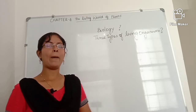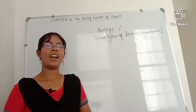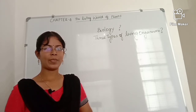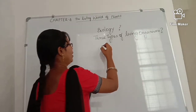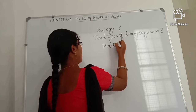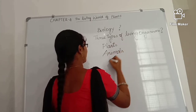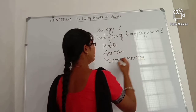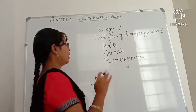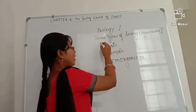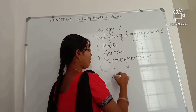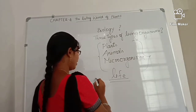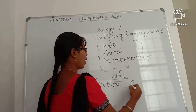What do you mean by biology? In the world there are three types of living organisms: plants, animals, and microorganisms. So these three are the living organisms. The study of these three living organisms which have life — their structure and function — is known as biology.